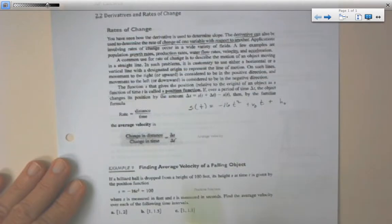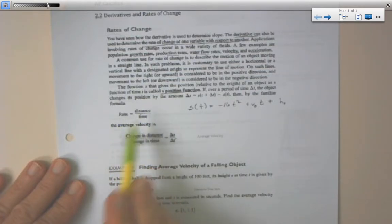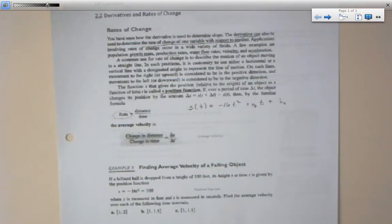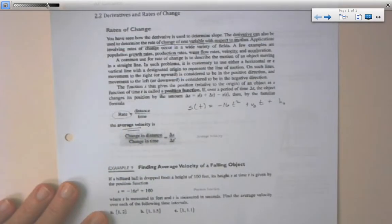We know that rate times time equals distance. If you solve for rate, that's distance over time. So if rate is how you change position over time, we also call it average velocity. It's the change in your distance over change in time.